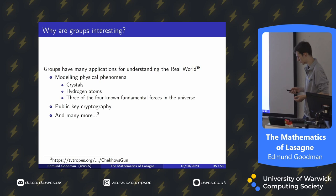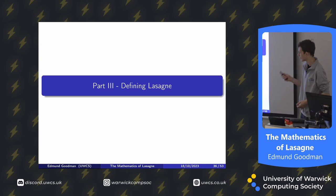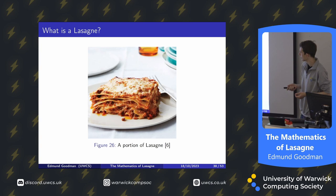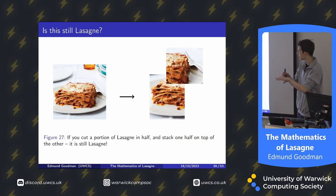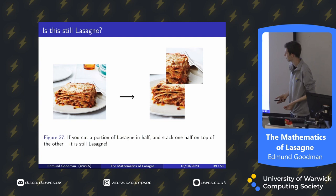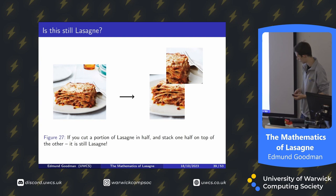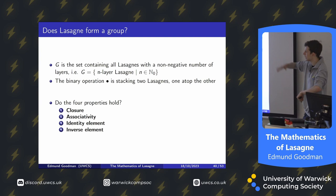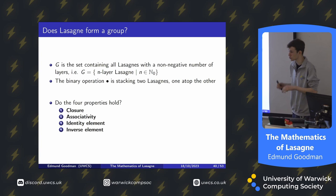Onto the final and most important part: defining lasagna. Much like Garfield, I love lasagna. The key result is: if you take a slice of lasagna, cut it in half, and stack the two pieces one atop the other, it's still lasagna. So does lasagna form a group? If we say G is the set of all lasagnas with a non-negative number of layers, and the binary operation is stacking two lasagnas one atop the other, this looks like it could form a group. We'll check the four properties: closure, associativity, identity element, and inverse element.